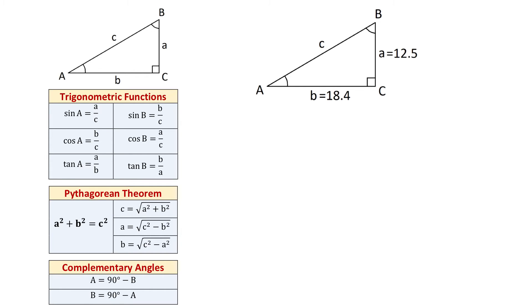Now, once we have all the formulas reviewed, we will get back to the problem we have to solve. In this triangle, we are given side A and side B, and we have to find the hypotenuse C, angle A, and angle B. We can start solving this triangle by finding the hypotenuse C, using the formula C equals the square root of A squared plus B squared.